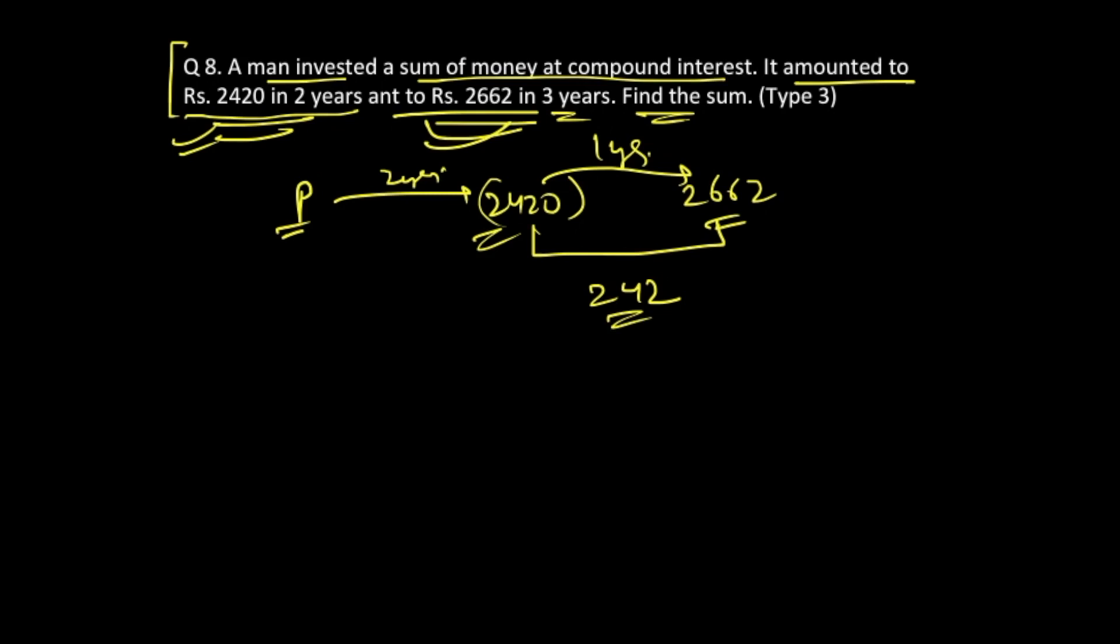So now you will find out the rate of interest. So rate of interest for the final year, that is this particular third year, will be applicable on this sum 2420. Right? So again, 242 is x percentage of 2420.